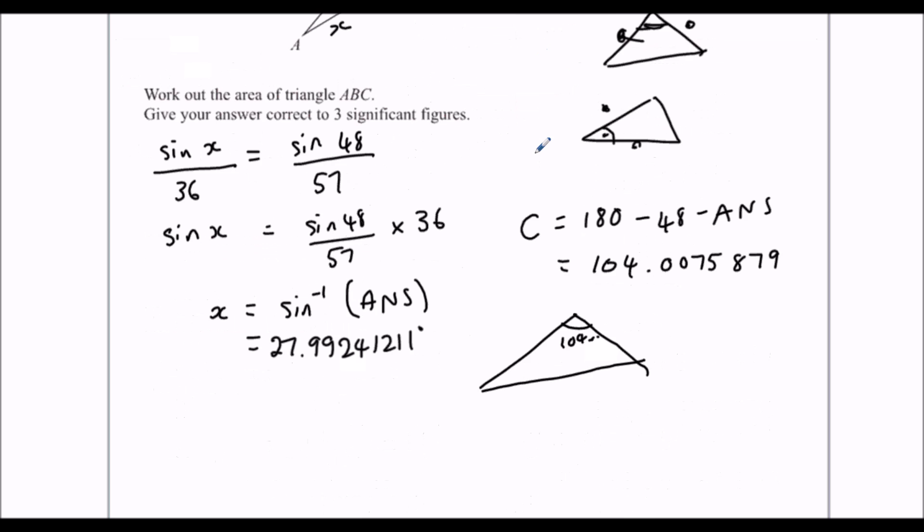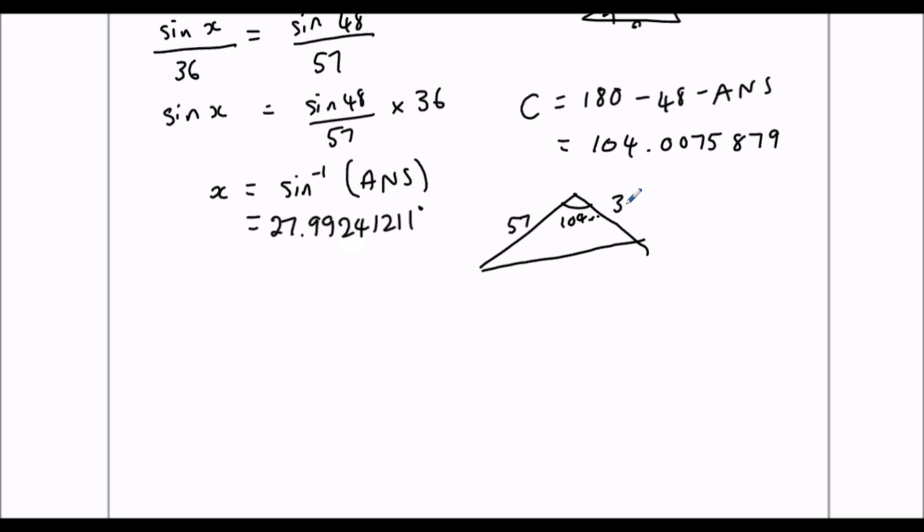And then we've got 57 and 36 next to it, and that's perfect for half ABC sin C. So the area is half times, this is big C. Half ABC sin C, big C is the angle. That's our 104.0075879, and then it doesn't matter which way around A and B are, so we'll just have 57, 36, sign, and then our answer to the previous question. Or you can type it out again, 104.0075879. You put this into the calculator and it should give you, to three significant figures, 995 meters squared.